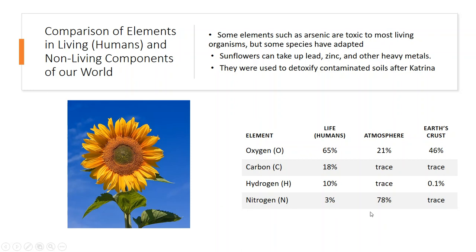Nitrogen makes up about 3% of living organisms, whereas the atmosphere is actually 78% nitrogen. So even though oxygen is very important to life, the air we breathe is actually 78% nitrogen.